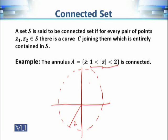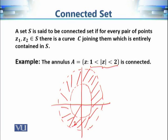The region consists of everything strictly between the two circles. If we take any two points in this region, there is always a curve joining them that is completely contained in the set. So this annular region is an example of a connected set.